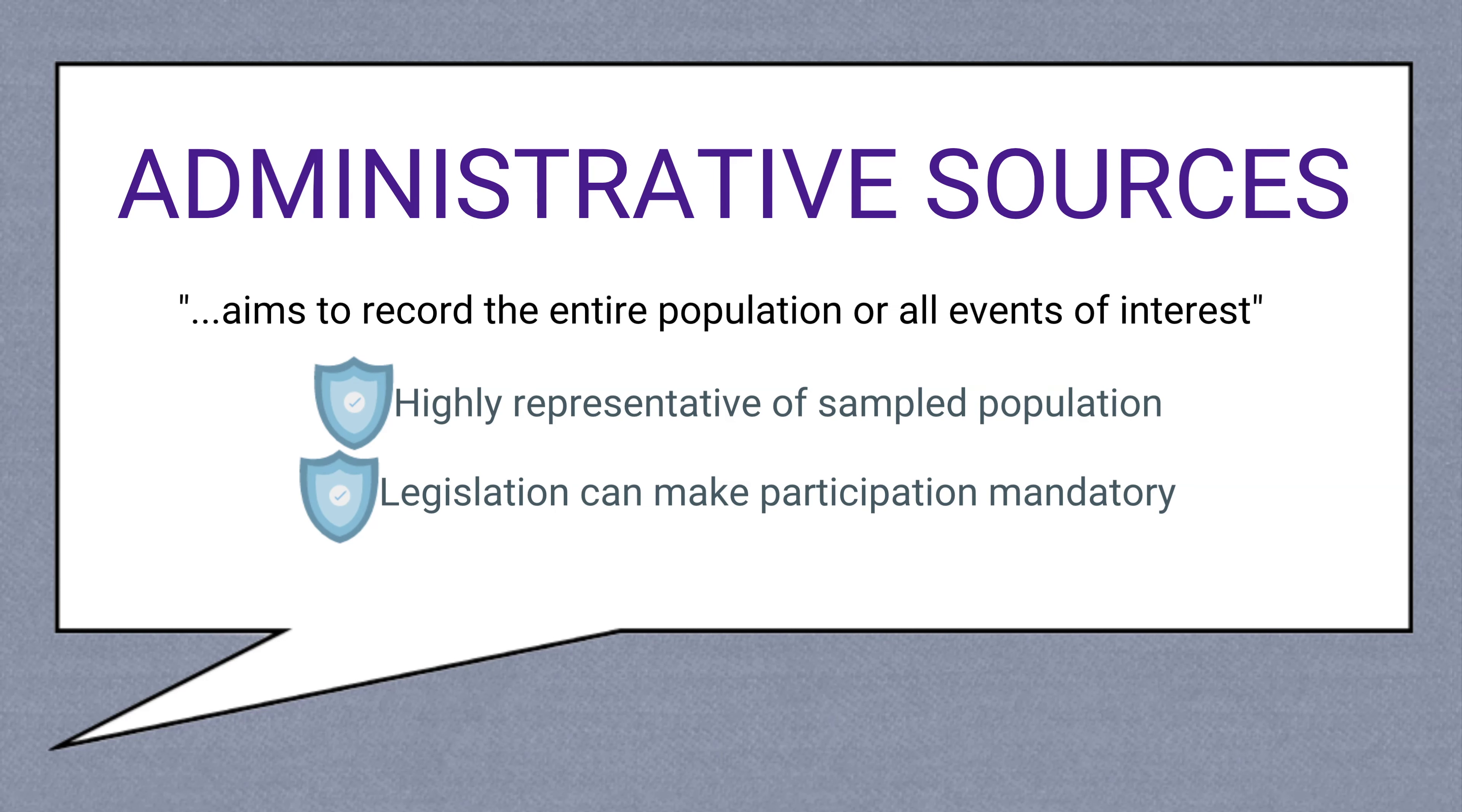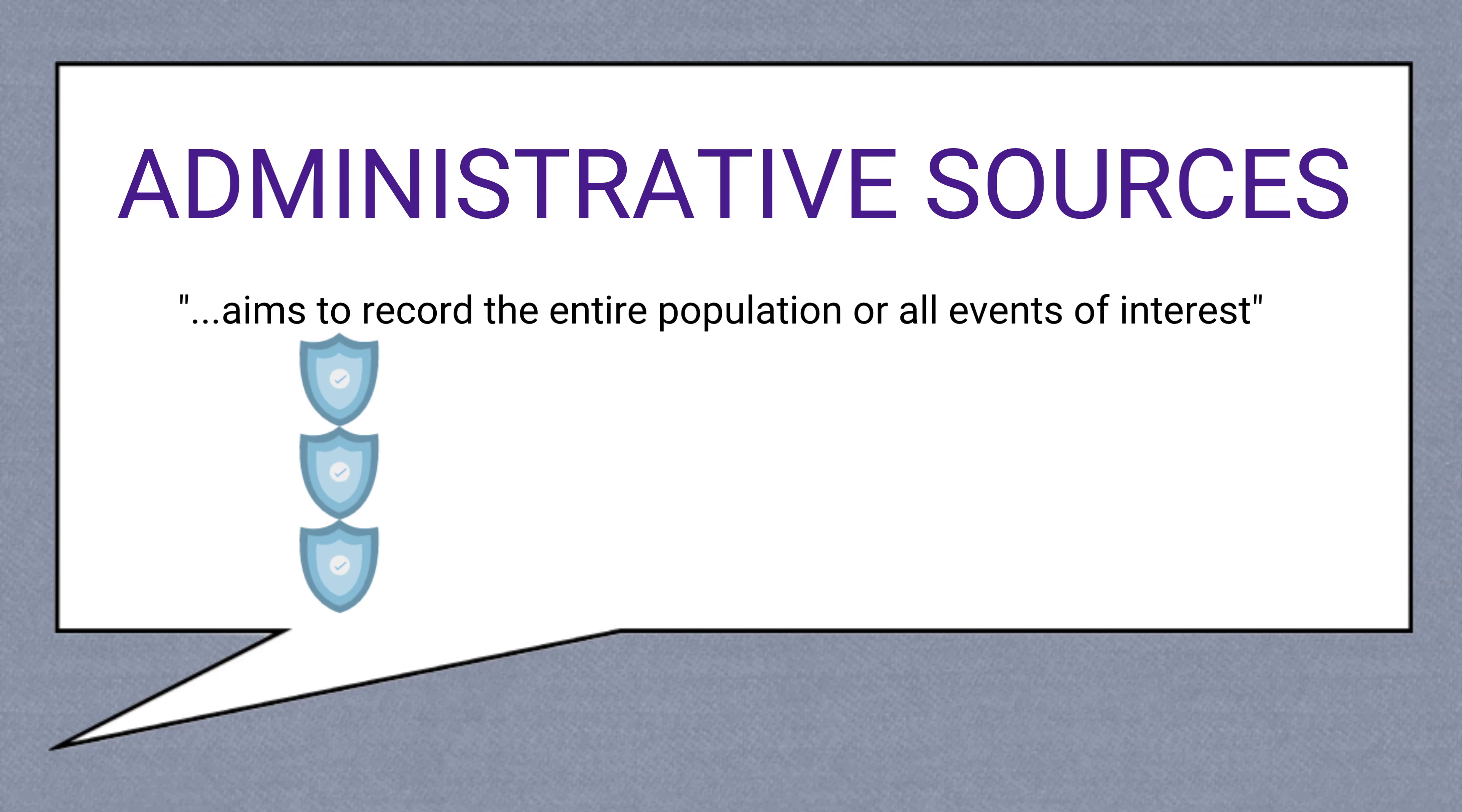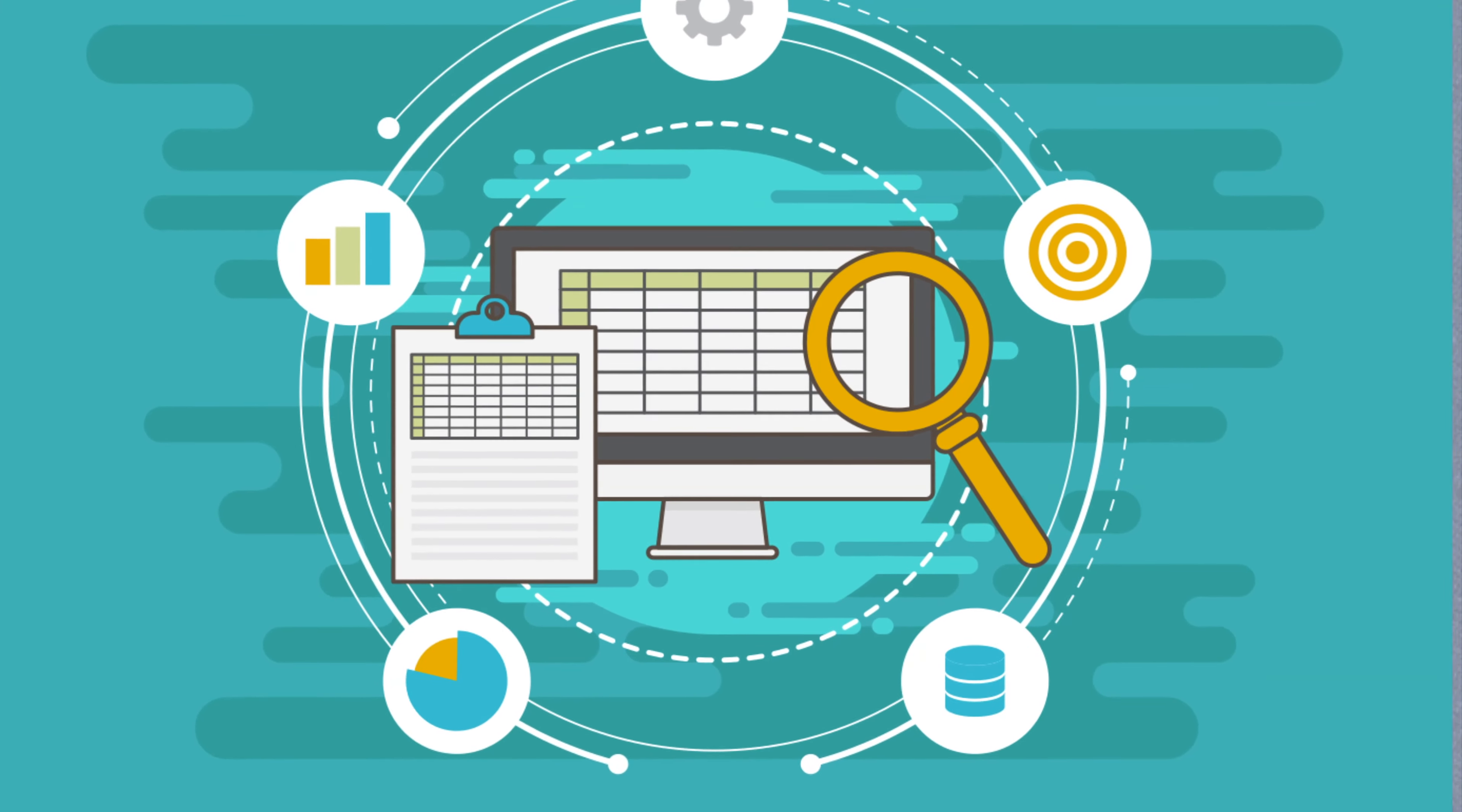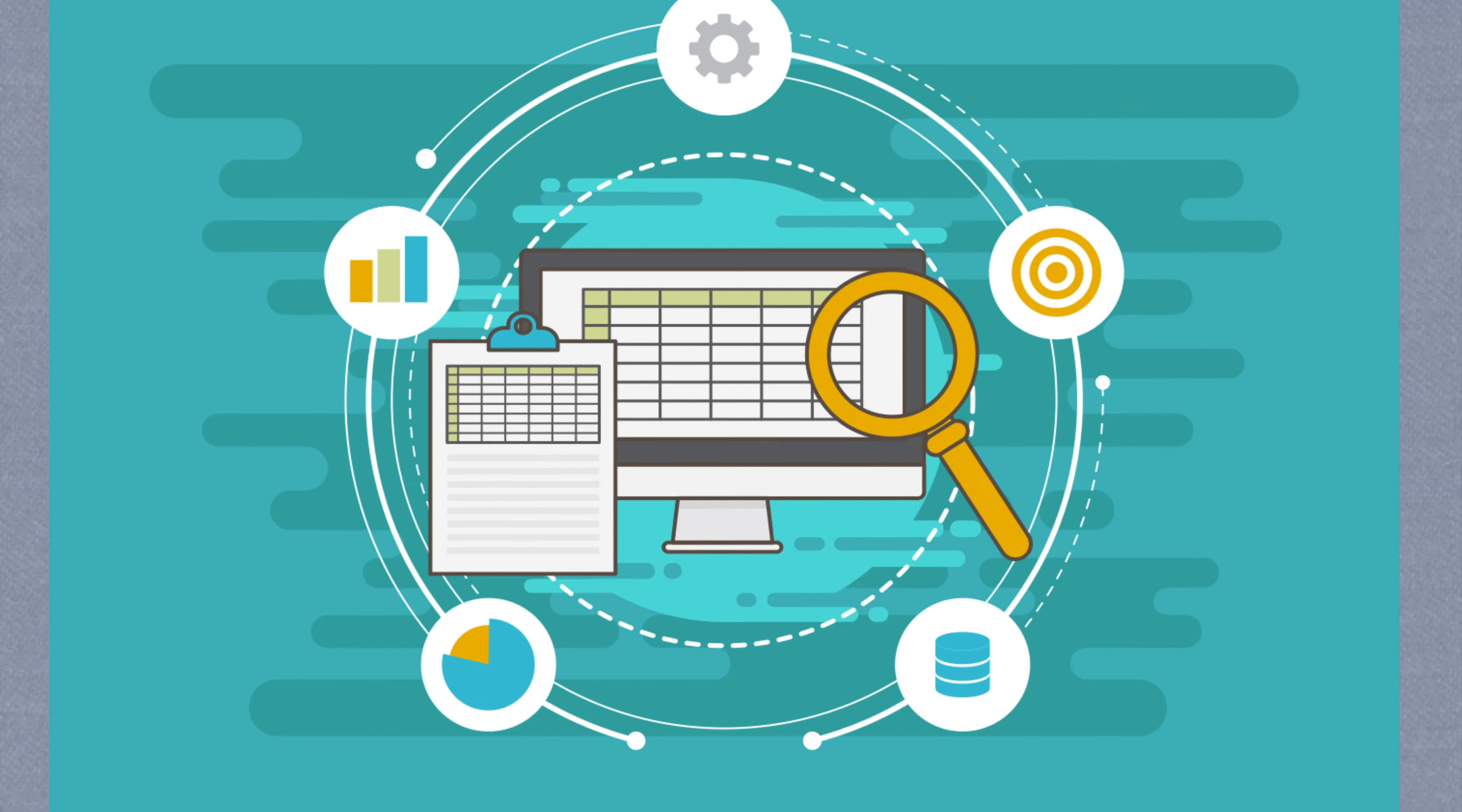So that's administrative data. Of course, the exact agency responsible for collecting this information differs from place to place, and the type of data collected could be anything from border security records to residence permit approvals and so forth. The important thing to remember is that they typically have a large sample size by virtue of trying to count everyone or every migrant under their jurisdiction. The type of information they cover, however, is largely limited to demographic issues.